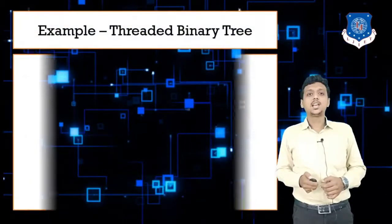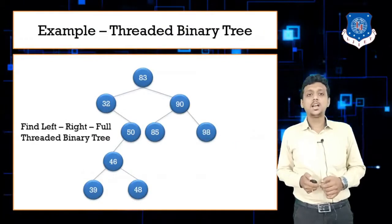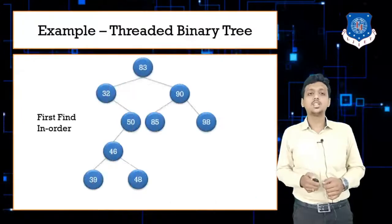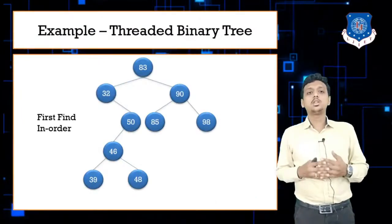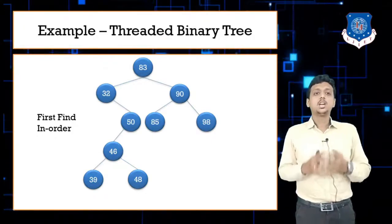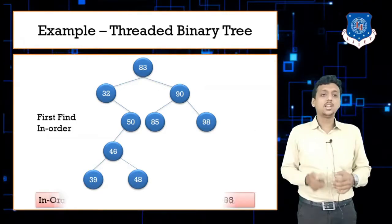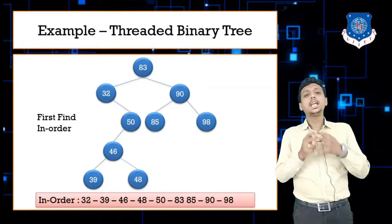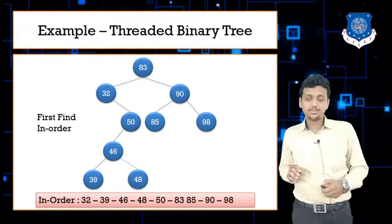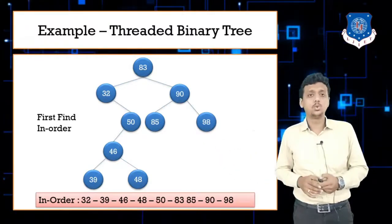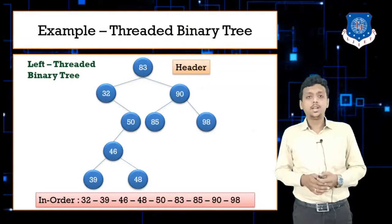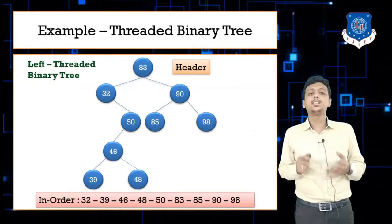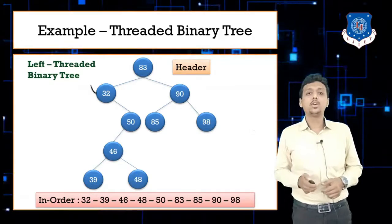Next is the example of threaded binary tree. In an exam you may be asked to write left threaded, right threaded, or full threaded binary tree. First, find the in-order sequence for the tree: 32, 39, 46, 48, 50, 83, 85, 90, 98. From this, check predecessor and successor nodes. For the left threaded binary tree: 32's predecessor is none, so its left pointer points to the header node. 39 points to 32, and 48's left pointer is modified to point to 46. 85's left pointer points to 83, and 98's left pointer points to 90.